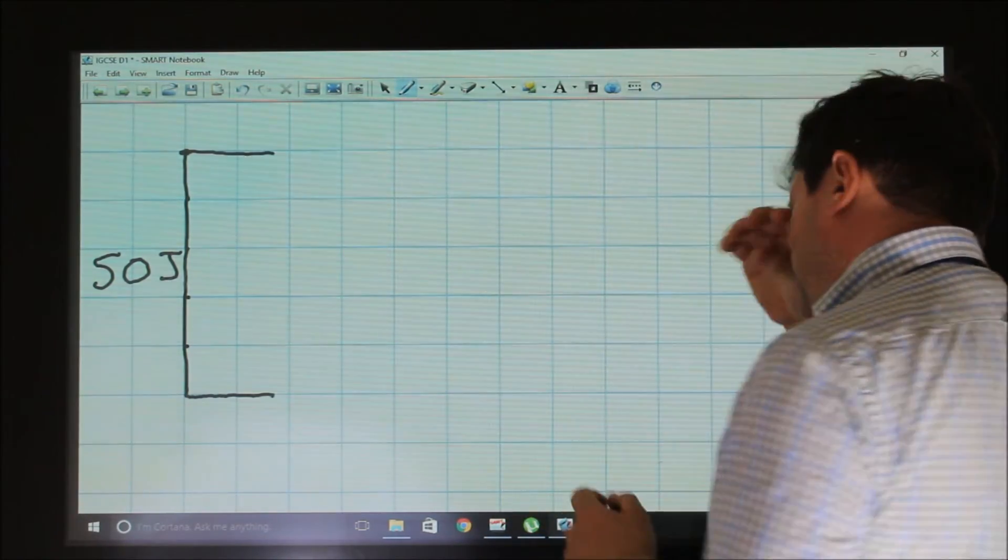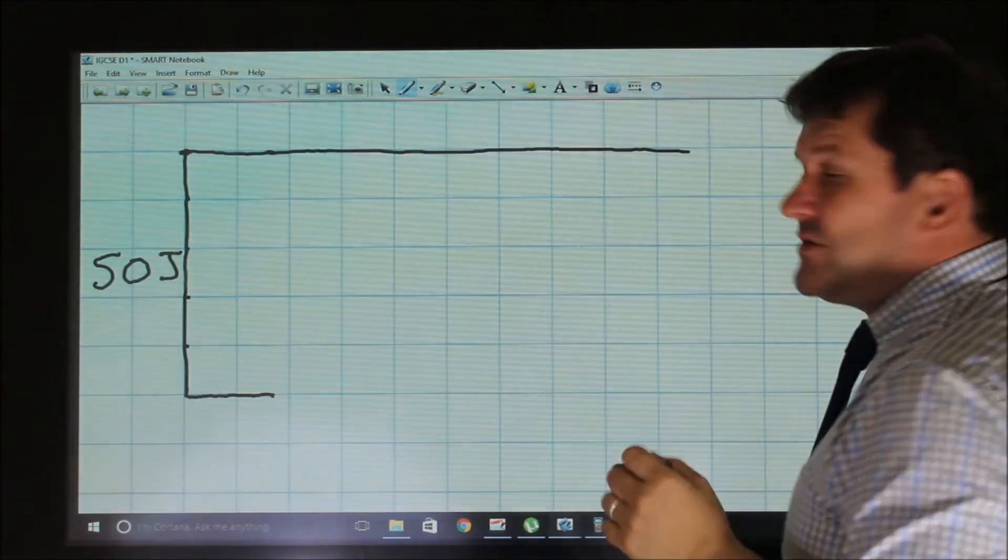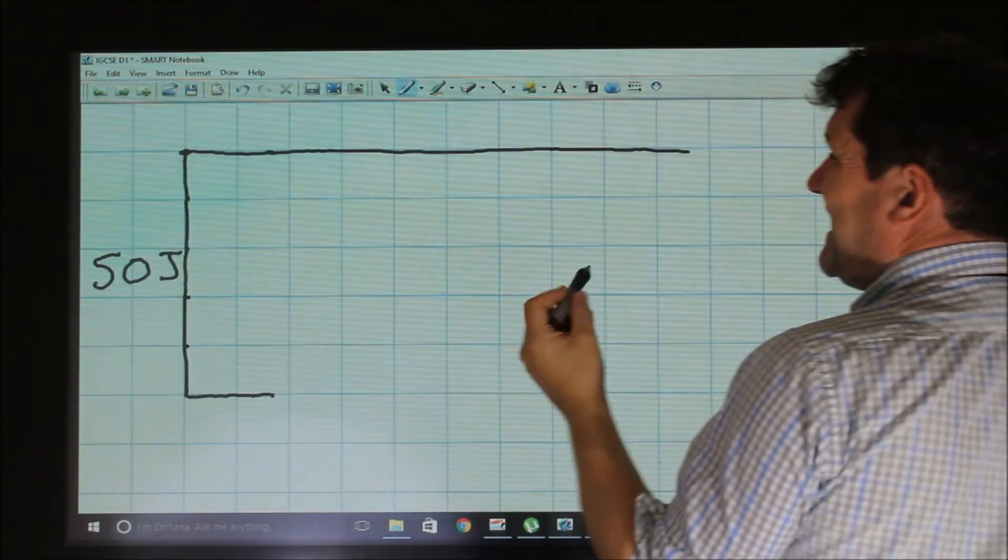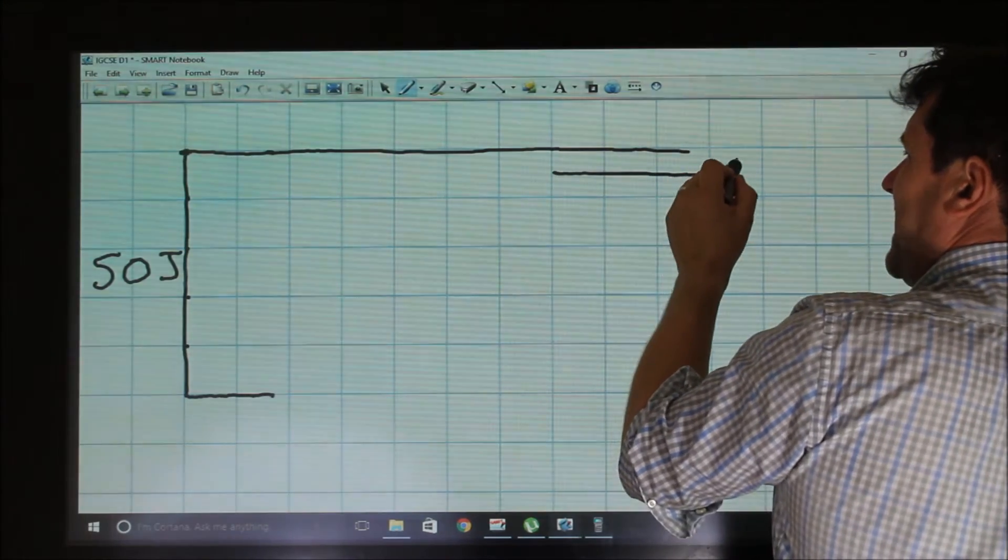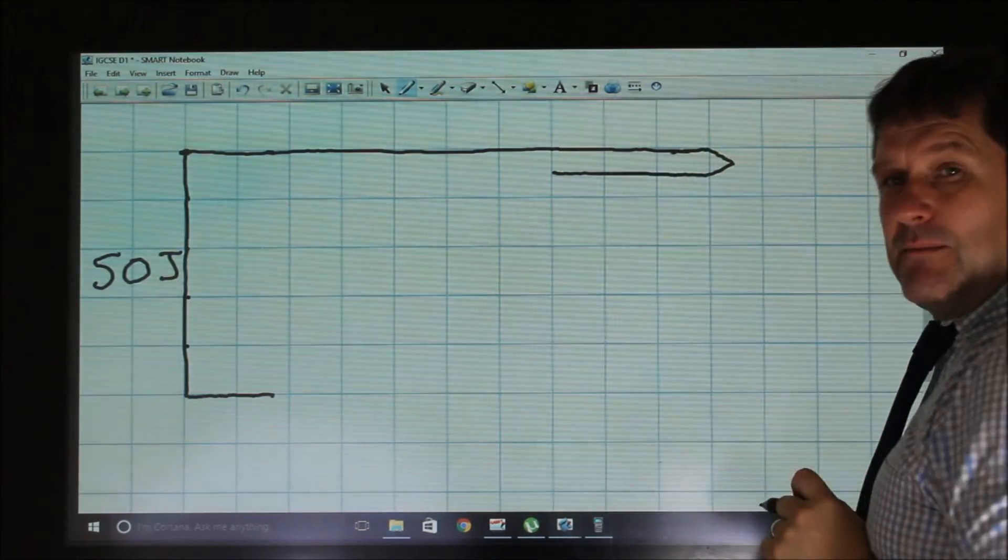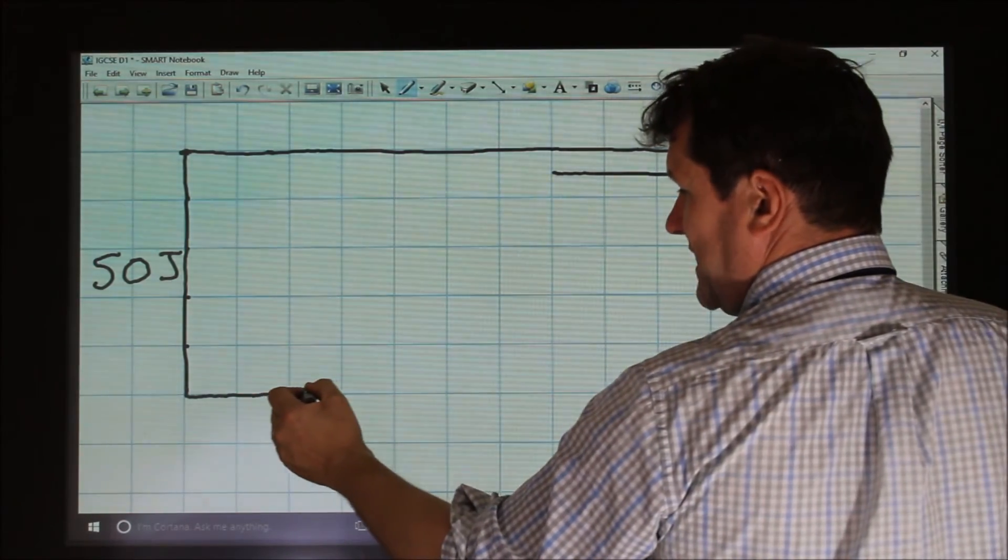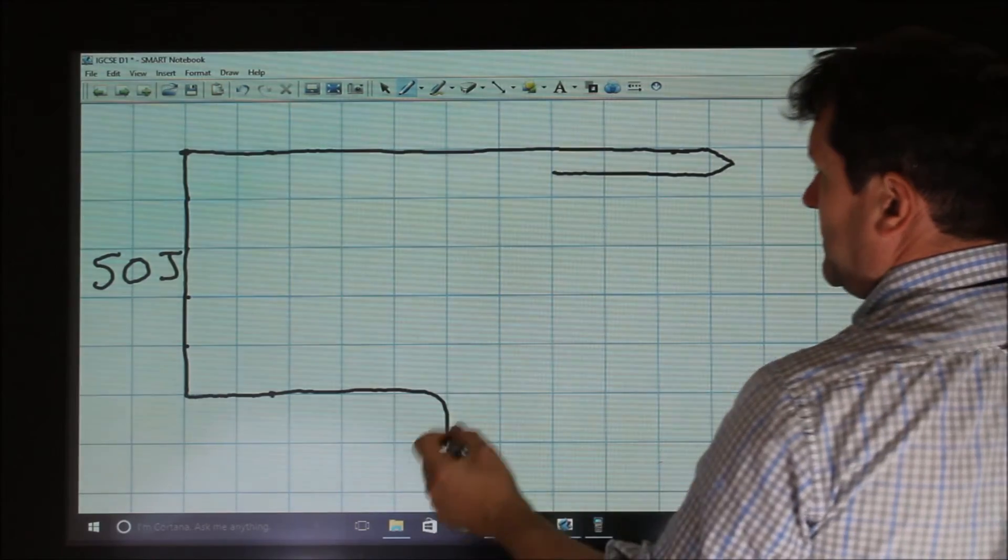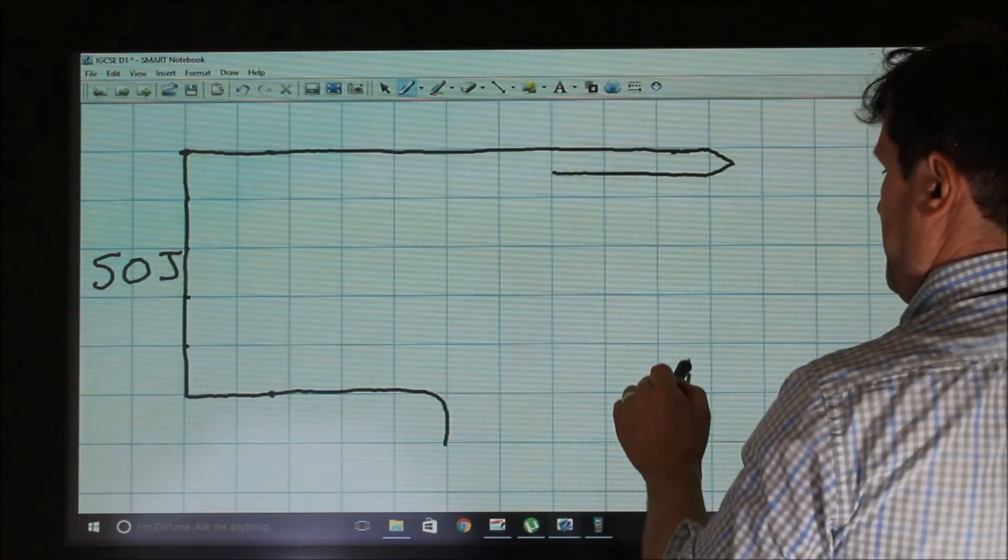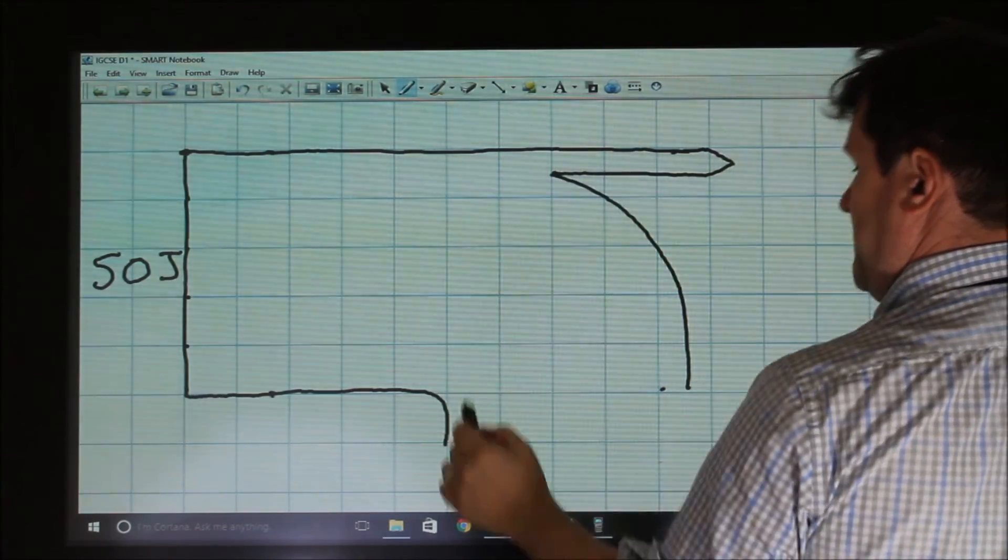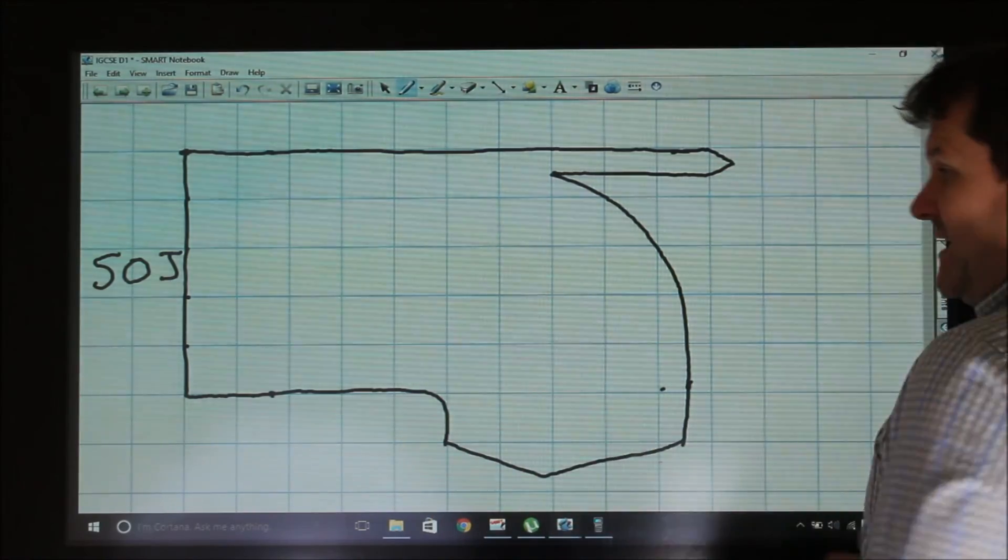So going across the top in a straight line, I need to think, how can I show 5 joules of useful energy? So if each one of these squares is 10, 5 joules is simply half a square. And that would be how much useful energy I have. And all the rest, which is 4 and a half squares, all the rest, 1, 2, 3, 4 and a half,